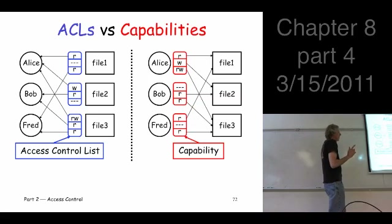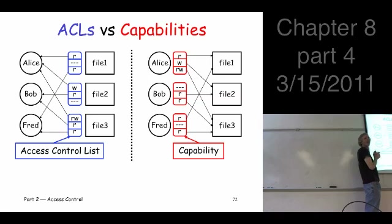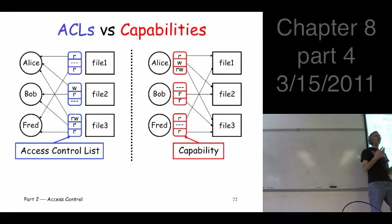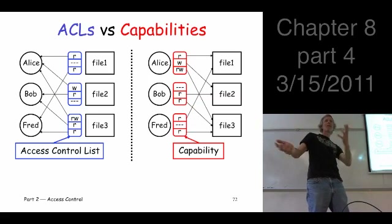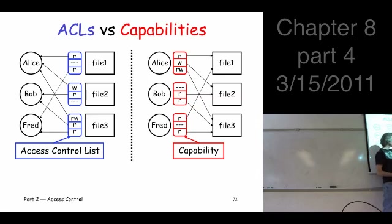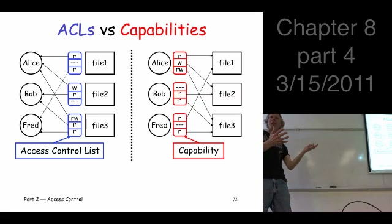Think about this. In the ACL case, Fred wants to know whether he can access a particular file. First he has to know what files are out there — that requires something else to look up. Then he goes to that file and checks whether he has access. With capabilities, the file structure is already built into the system, so you don't need a separate entity. In fact, if Fred isn't supposed to have access to file two, he doesn't even know about file two — he can make that decision right at that point. You could do the same with ACL, but it would be more clumsy.